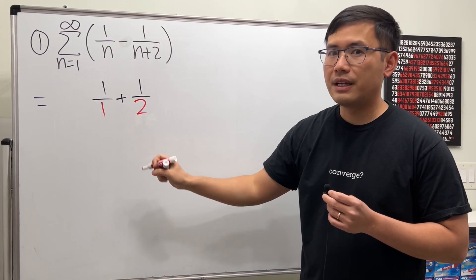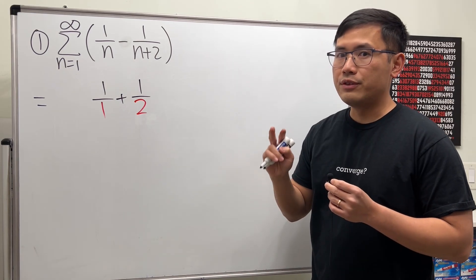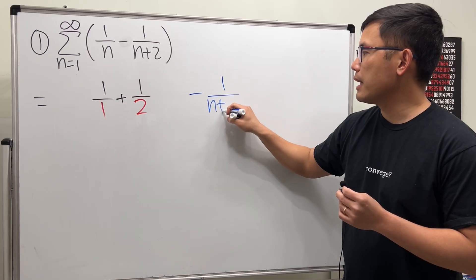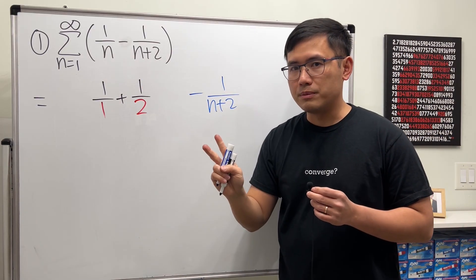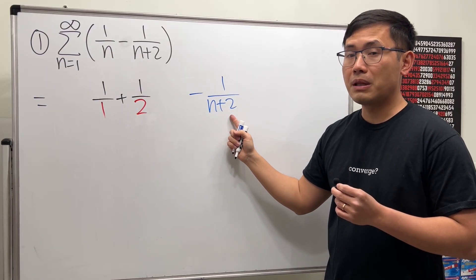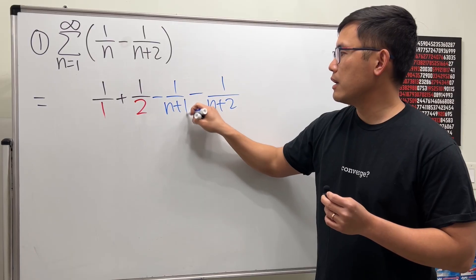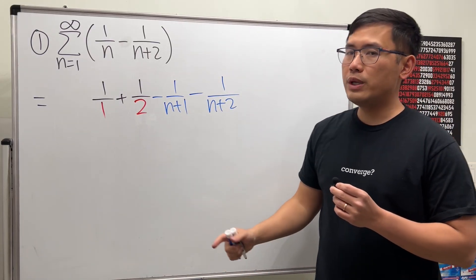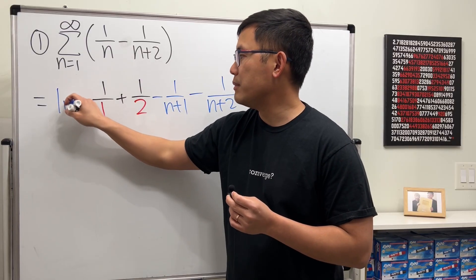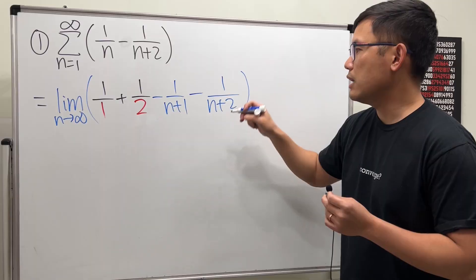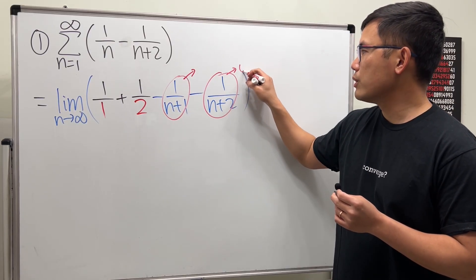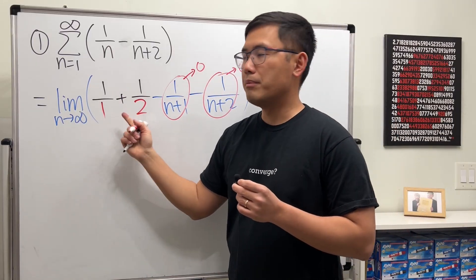These are the first two terms. Since they are off by two, we also need two terms at the end that we're subtracting: minus one over n plus two, and the previous term minus one over n plus one. Two terms in the front, two terms at the end — this is the nth partial sum formula. Take the limit as n goes to infinity; one over infinity goes to zero, so we just compute one plus one half.